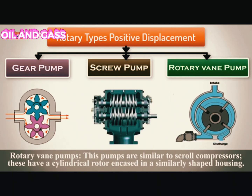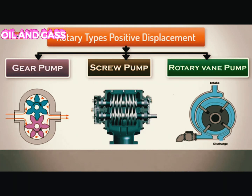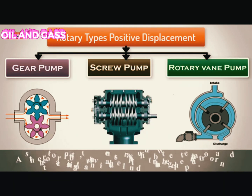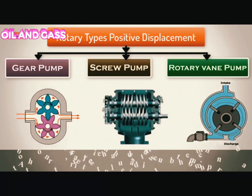Rotary vane pumps are similar to scroll compressors. They have a cylindrical rotor encased in a similarly shaped housing. As the rotor orbits, the vanes trap fluid between the rotor and the casing, pushing the fluid through the pump.